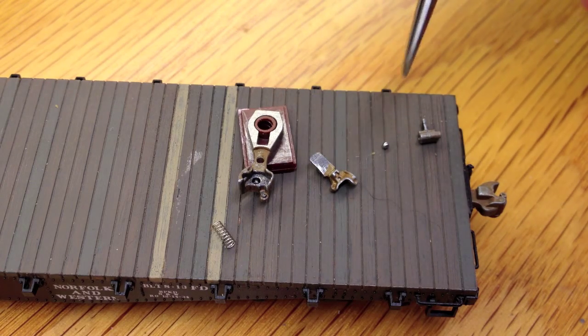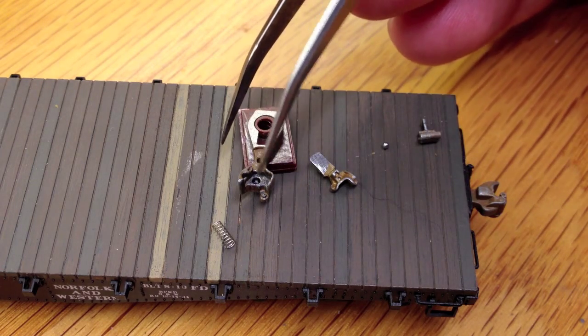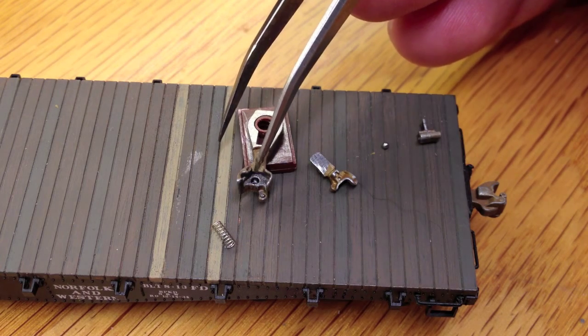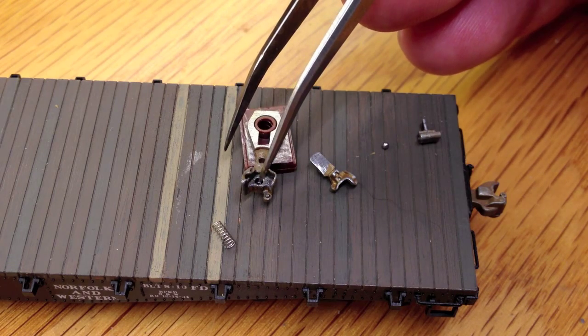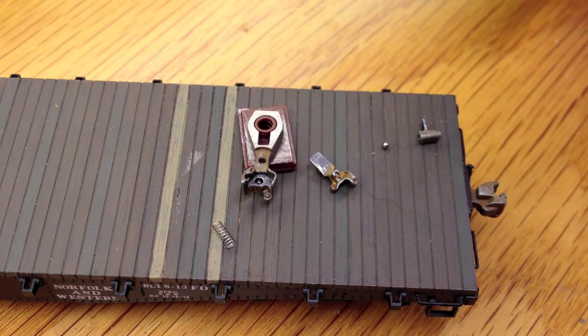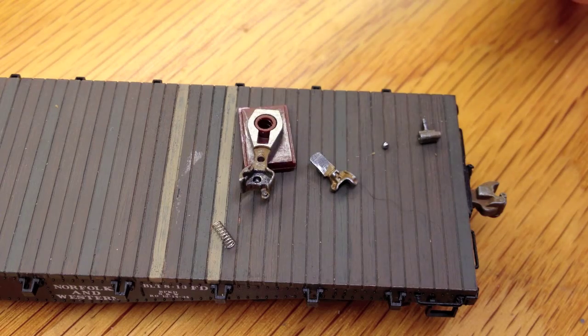So I decided to take it apart and see what's going on with that. I think I found the problem. When I assemble these things, I use a number two pencil to provide some graphite for lubrication around here, and I think I had too much in this chamber, and that was causing the ball to stick.